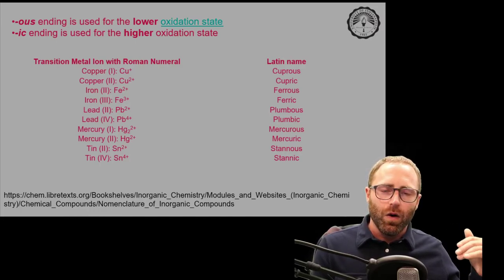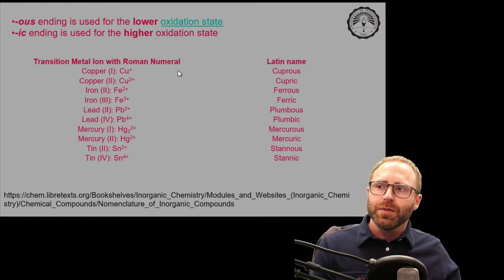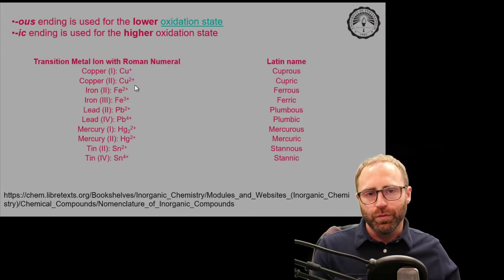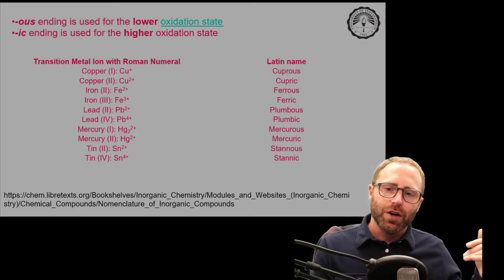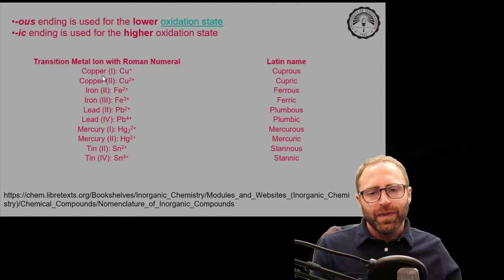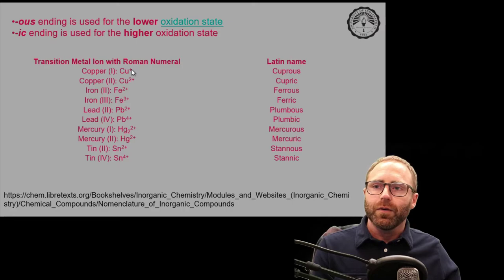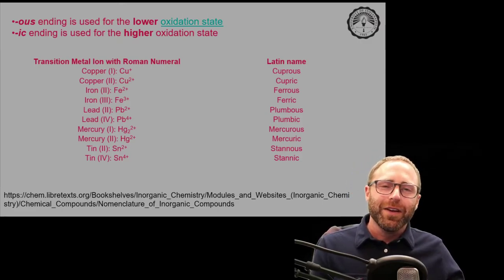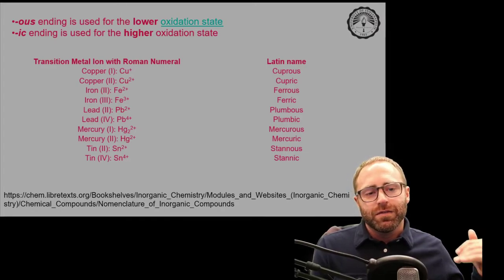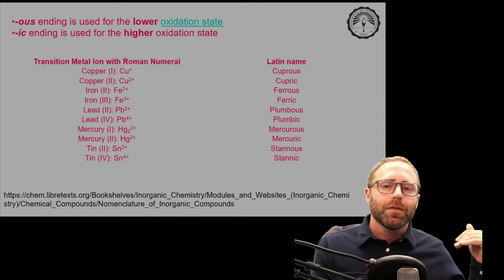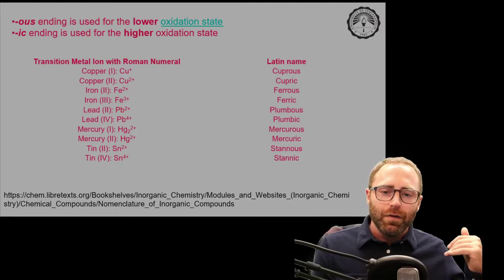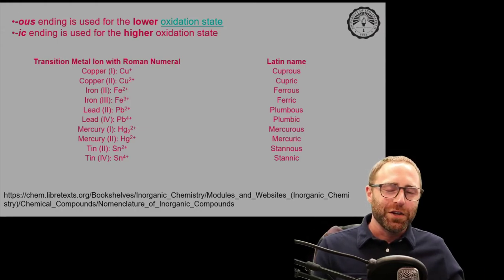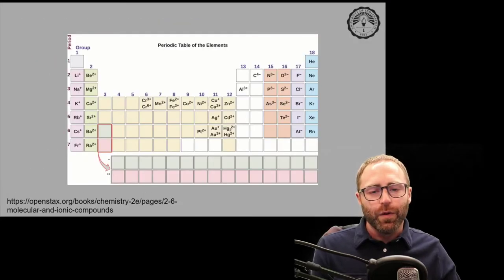Here are the old names briefly: copper(I) is cuprous, copper(II) is cupric — the lower oxidation state gets the -ous ending, the higher gets the -ic ending. The problem is iron(II) is ferrous while copper(II) is cupric — they have different endings because iron has a higher state of +3. As you can see, this gets confusing. We're not going to do it.